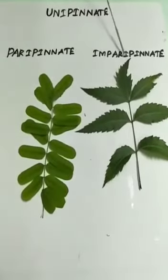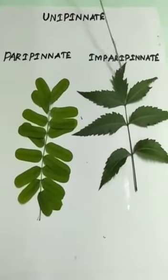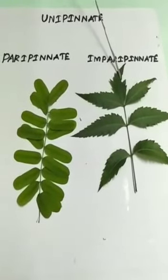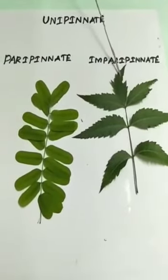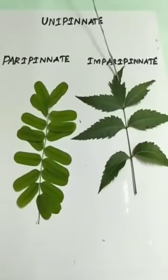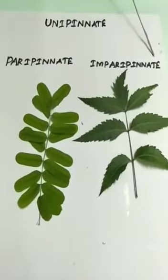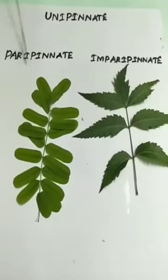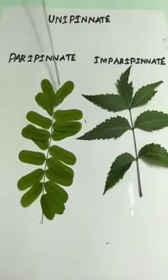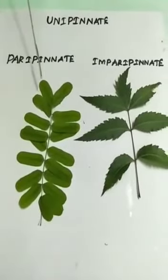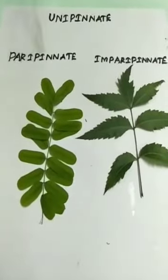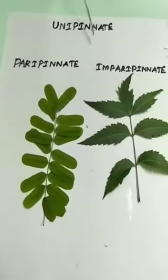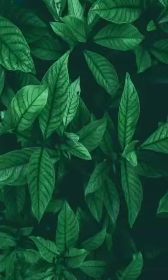The types of unipinnately compound leaves are paripinnate and imparipinnate. In imparipinnately compound leaf, the terminal leaflet is odd in number — there is only one terminal leaflet, so there is no pair. In paripinnately compound leaf, the terminal leaflets are even in number, so it is known as paripinnate — there is a pair. This is the unipinnately compound leaf.